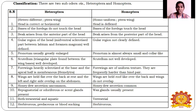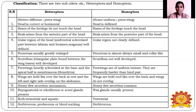In Heteroptera, the base of the fore legs cannot touch the head, but in Homoptera the four legs can touch their head. In Heteroptera their beak arises from the anterior part of the head; in Homoptera their beak arises from the posterior part of the head. The gular region — the mid-ventrally sclerotized part between the labium and the foramen magnum — is well defined in Heteroptera but not clearly defined in Homoptera.